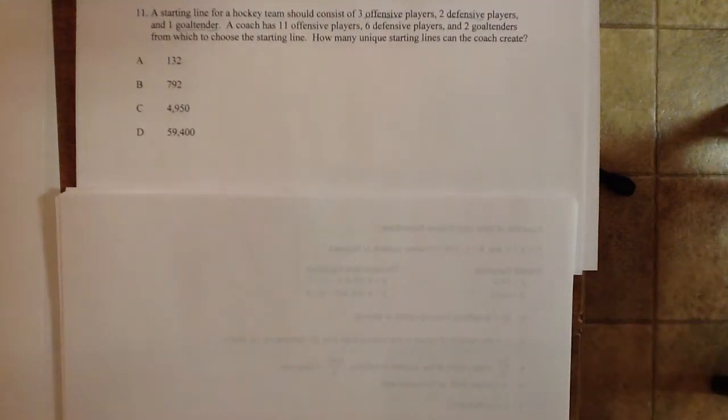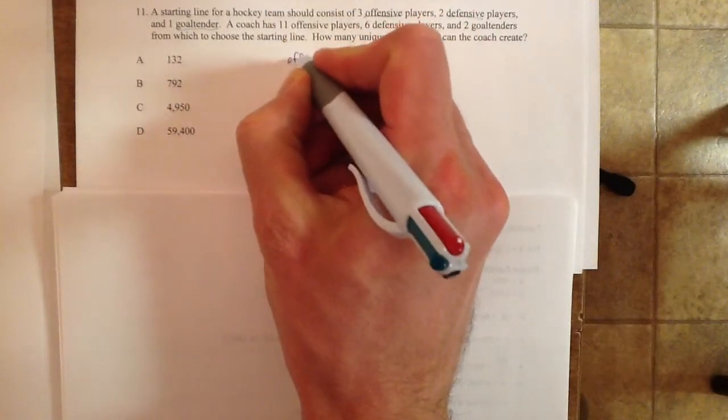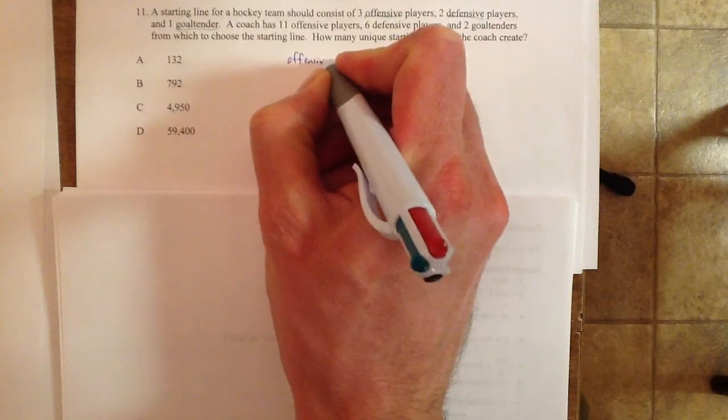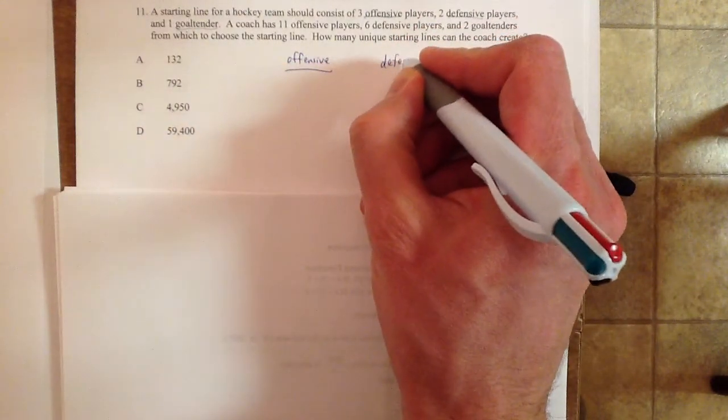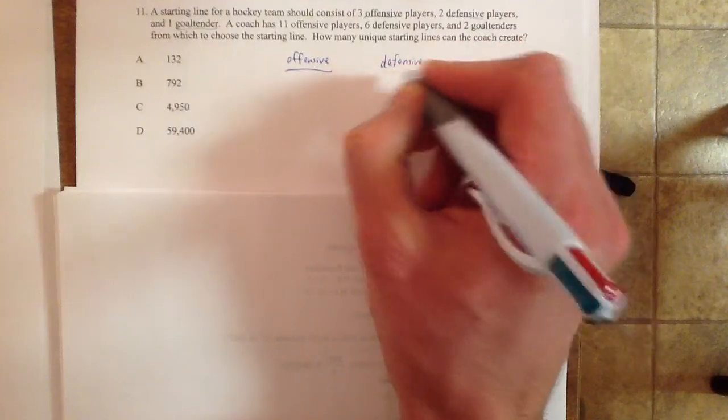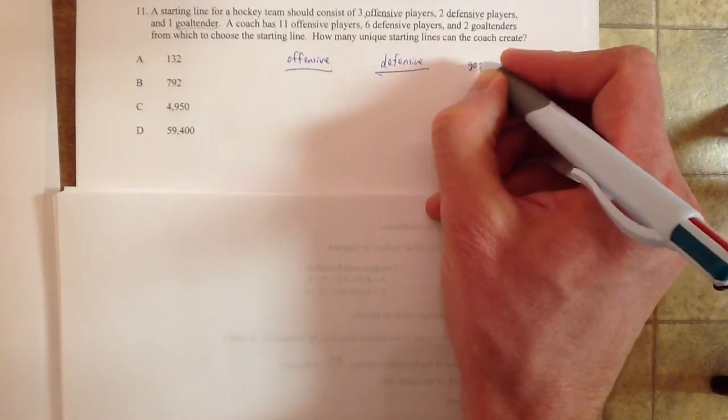What we're going to need to do is not get crazy with it. Just stop right there and let's figure out one thing at a time. We're dealing with offensive people, defensive people, and a goaltender.